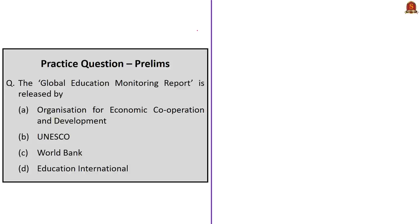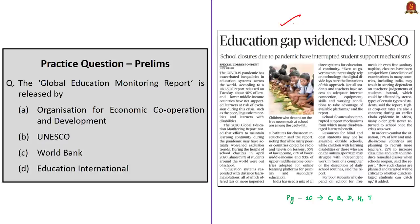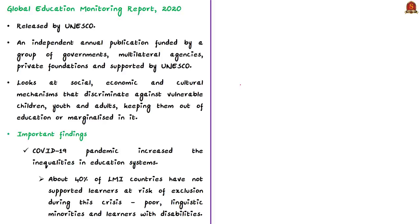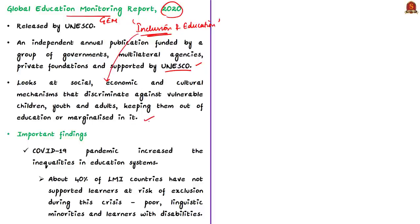Let us look at this question framed based on the news article about the Global Education Monitoring Report. The question is: the Global Education Monitoring Report is released by — and the correct answer is option B, UNESCO. It is an independent annual publication funded by a group of governments, multilateral agencies, and private foundations, and supported by UNESCO. The theme of the 2020 Global Education Monitoring Report — in short, the GEM Report — is 'Inclusion and Education.' It looks at the social, economic, and cultural mechanisms that discriminate against vulnerable children, youth, and adults, keeping them out of education or marginalized in it.